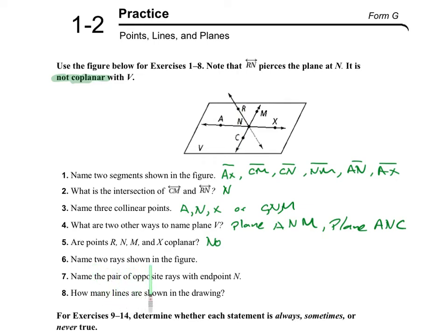Name two rays shown in the figure. So for example, ray AX and ray NM are two rays. NC is another one, and XA is another one. Note that ray XA and ray XN are the same ray. Remember that a ray has an endpoint and goes infinitely to the other side.